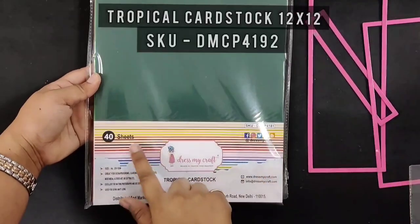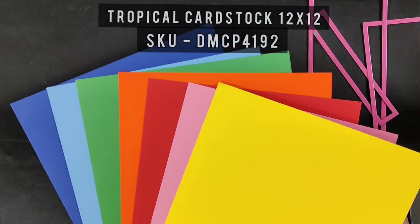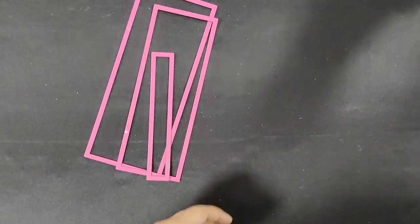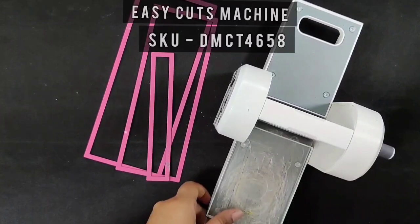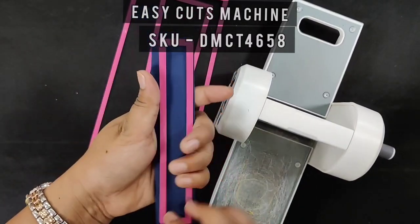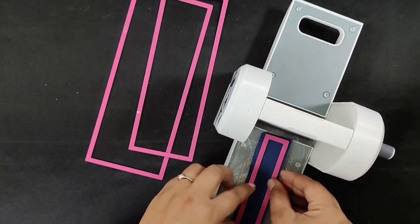Now take tropical cardstock from Dress My Craft in various colors. Die cut on all of these cardstocks using the smallest die from the set.